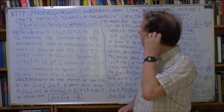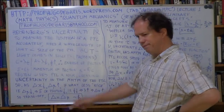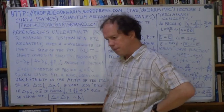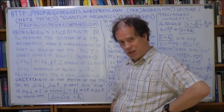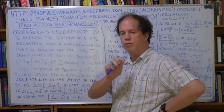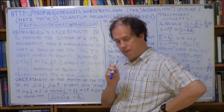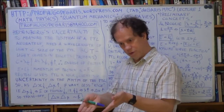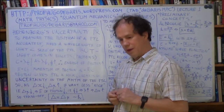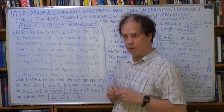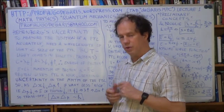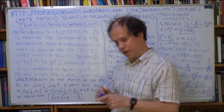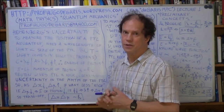So I'll begin with a sort of plausibility type argument for Heisenberg's uncertainty principle, saying essentially that there's a trade-off. The more accurately you know the position of a particle, the less accurately you know its momentum, or vice versa. If you prefer to measure the momentum — the velocity — of a particle with great accuracy, you will then lose accuracy about its position. It's a trade-off. You can't have both to infinite accuracy. That's what the Heisenberg uncertainty principle says.